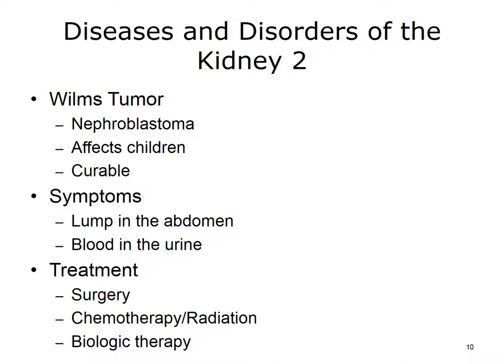Treatment for kidney failure also includes a kidney transplant. A transplant is an operation that places a healthy donor kidney into a patient. The transplanted kidney takes over the work of the two kidneys that have failed. During the transplant, the surgeon places the new kidney in your lower abdomen and connects the artery and vein of the donor kidney to your own artery and vein. The new kidney will often start making urine as soon as blood starts flowing through it, but sometimes it takes a few weeks to start working. Kidney transplants are one of the most common transplant operations in the United States, and only one donated kidney is needed to replace the work previously done by two.